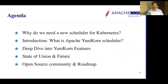Let's look at the agenda for today. The first topic is why do we need a new scheduler in Kubernetes. Then I will give an overview of Apache Yunikorn, and we'll dive deep into the various features of Yunikorn, its open source community, roadmap, and what we are planning for the future.